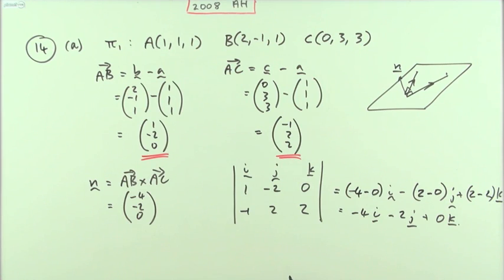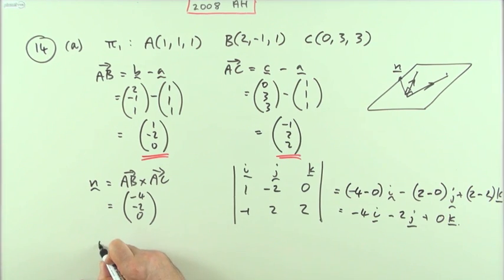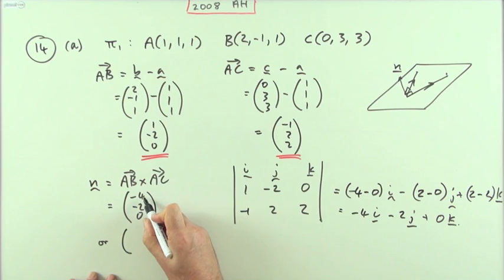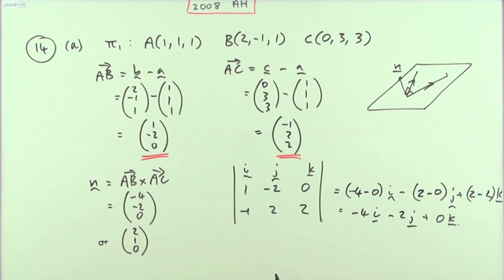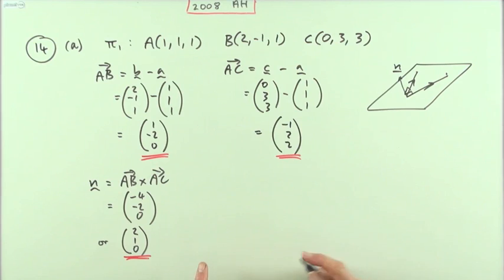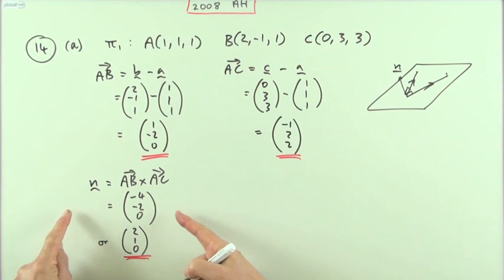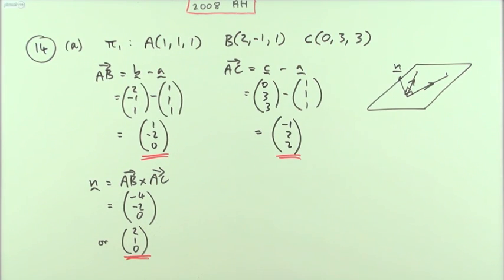Now, any vector perpendicular to the plane would do. So instead of (−4, −2, 0), I could divide by −2 and use (2, 1, 0) which is more convenient. I'll clear that away — so I've got my normal vector (2, 1, 0).